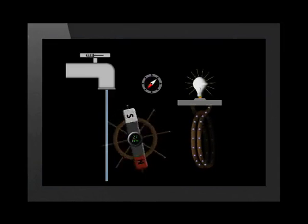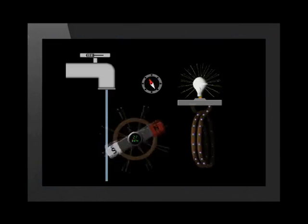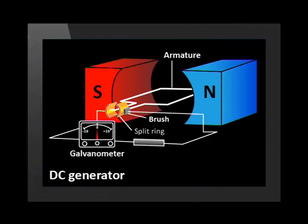Luckily, we have already encountered a machine that allows movement of a coil through a magnetic field. Does this machine look familiar? That's right, the electric motor allows a coil to change its position in a magnetic field. In fact, the parts of a motor and a generator are the same.